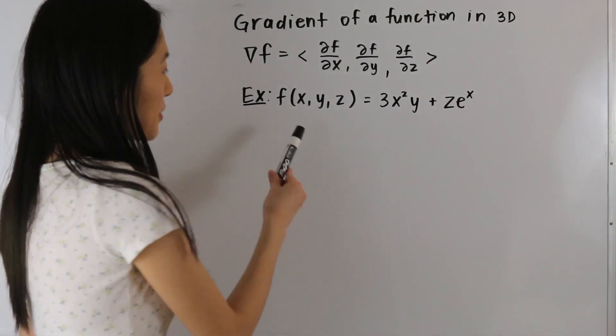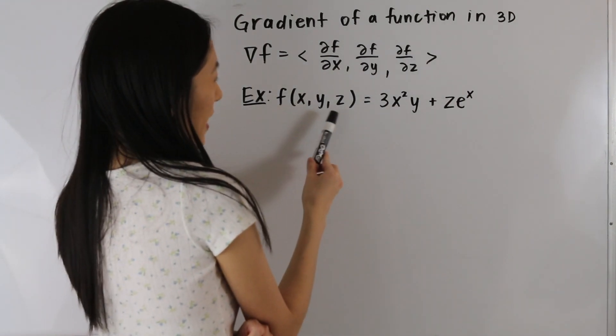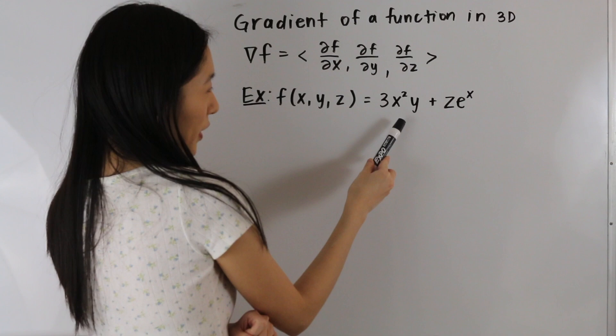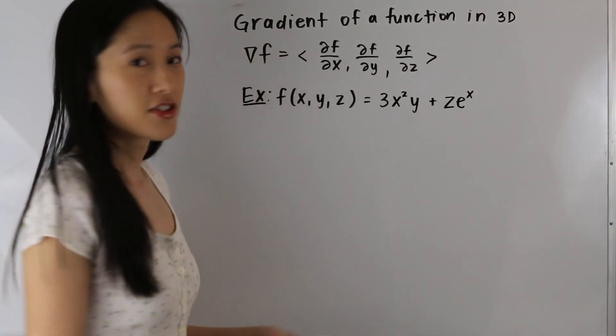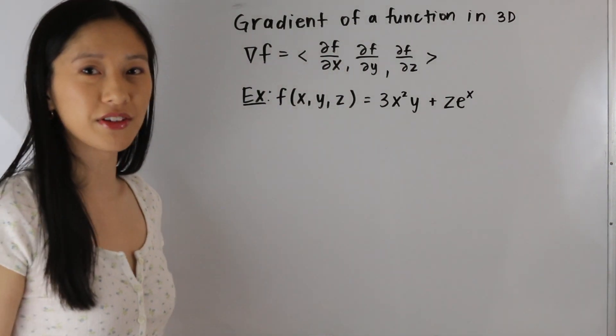So in this example here, we have f of x, y, z is equal to 3x squared y plus z e to the x. So let's go ahead and start out by taking our partial derivatives.